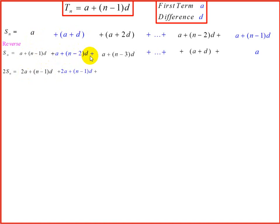That will give us n minus 2 into d plus the d, which gives us n minus 1 into d. And if we add these two, we'll get the same answer: 2a plus n minus 1d.